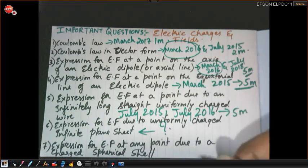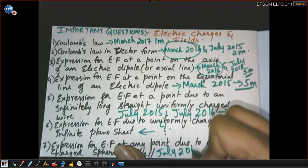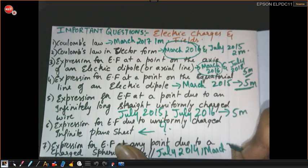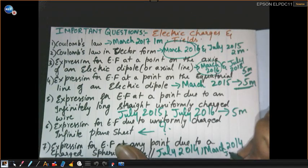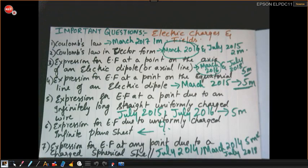The next question is the expression for electric field at any point due to a charged spherical shell. This question appeared in July 2014, March 2014, and July 2018 for five marks — so it has come multiple times in the annual exam.